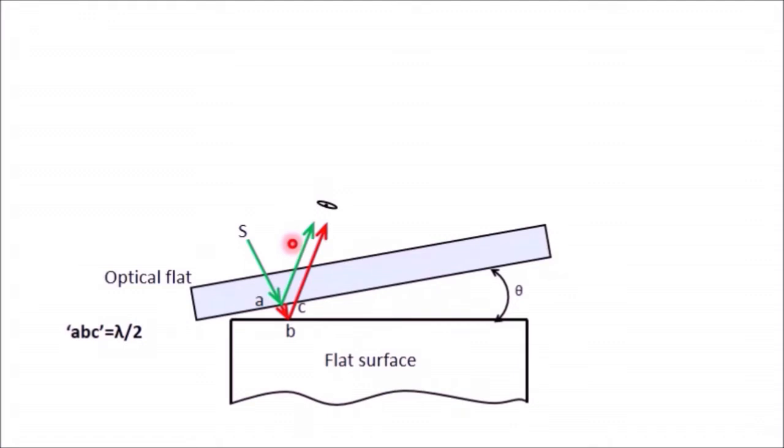Next consider another light ray from the same source falling on the optical flat at a small distance from the first one. Again, some part of this ray gets reflected and some is transmitted, then reflected at the flat surface. The distance traveled by these two rays is different, and this difference is given by DEF. This distance DEF is greater than ABC.